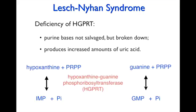Lesch-Nyhan syndrome was covered when we looked at the salvaging of free purine bases. To remind you, it's caused by the deficiency of HGPRT, which catalyzes these reversible salvage reactions. In the absence of purine bases being salvaged, they build up and are broken down to uric acid. To treat this, you give patients allopurinol, which stops the production of uric acid so it doesn't crystallize, causing a buildup of uric acid precursors instead, which helps alleviate the problem.